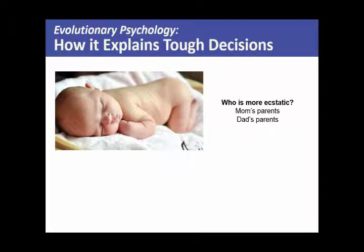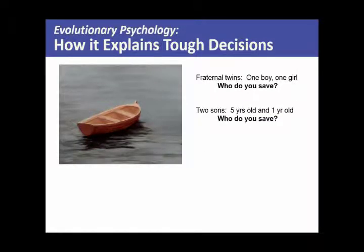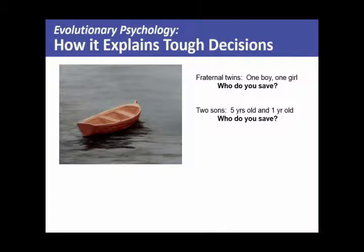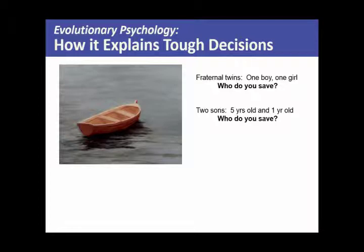Evolutionary psychologists say that you should want to save the boy in the fraternal twin set and save the five-year-old. You save the boy because according to evolutionary psychology, we instinctively know that the boy is our better bet for getting our genes into the future — he has more reproductive capability. Even though in modern times he's not supposed to spread his genes around, our caveman brain, according to this theory, thinks: save the boy. He's got a better chance of getting our genes into the future. Students sometimes say he carries the family name — but that's really a euphemism for he can make more offspring.